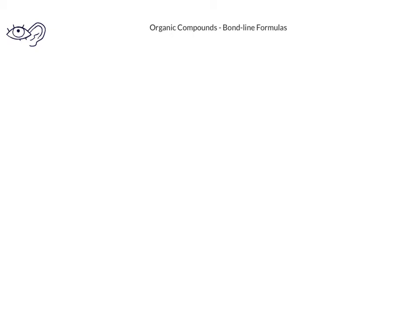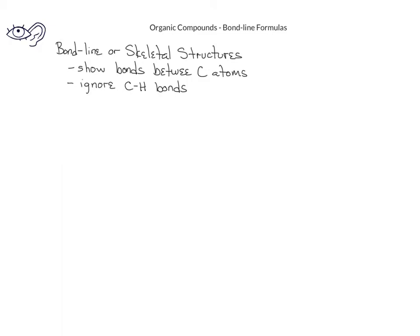Sometimes even drawing a condensed structural formula can be a little bit tedious. Due to this, chemists have developed a shorthand way of drawing structural formulas known as bond line or skeletal structures. Skeletal structures only show the bonds between carbons, but they do not show the bonds between carbons and hydrogens. It's understood that a carbon will have four bonds, so if we see a carbon with one line leaving from it, that indicates that carbon is bonded to one other carbon, and that carbon will have three bonds to hydrogens.